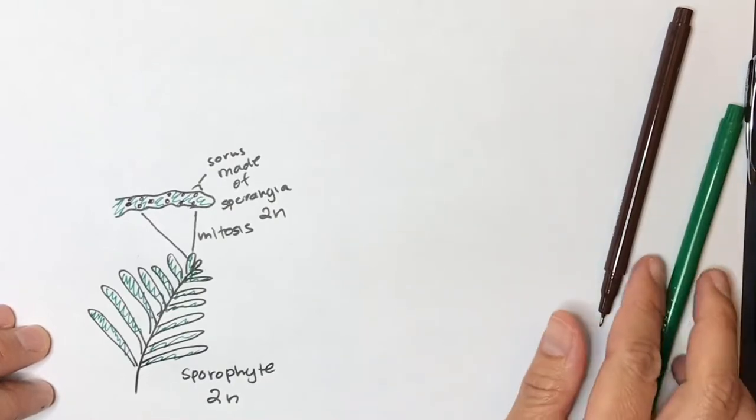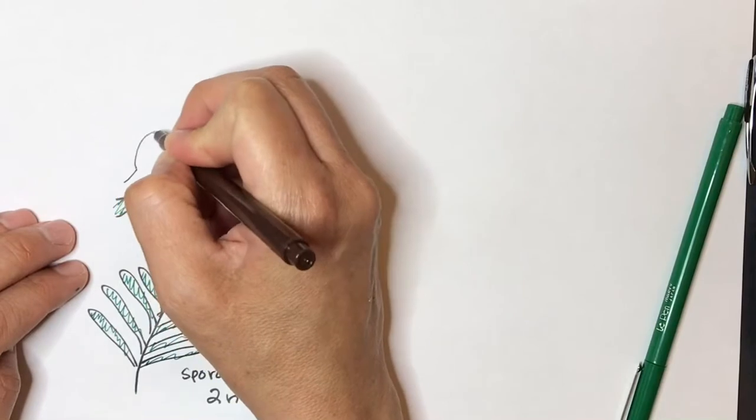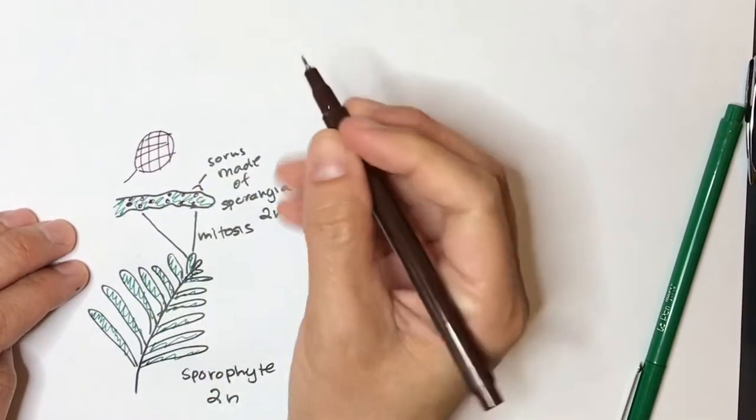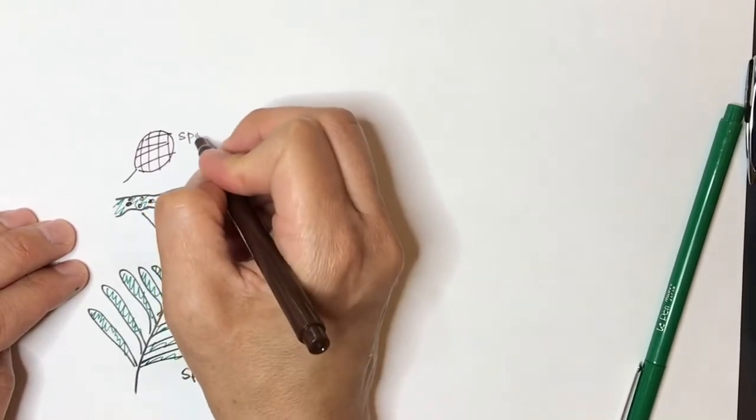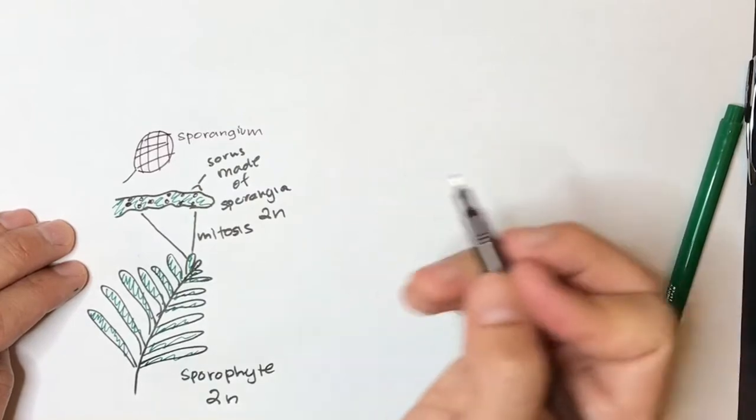So within the sporangia itself, we get meiosis occurring. So here is just one. So this is one sporangium. Inside of it, we have meiosis occurring.